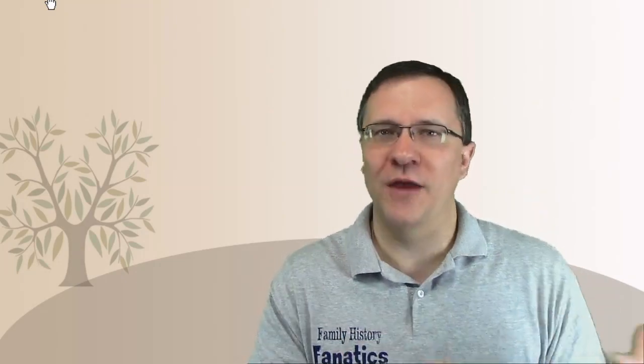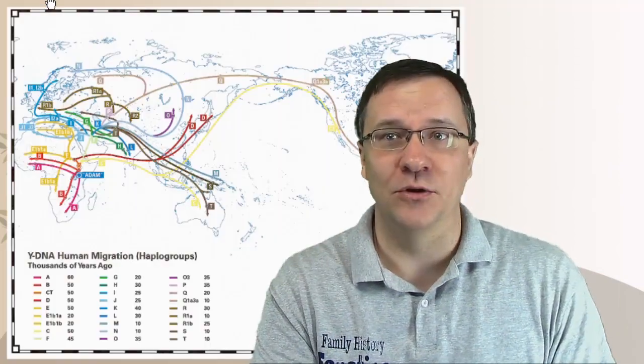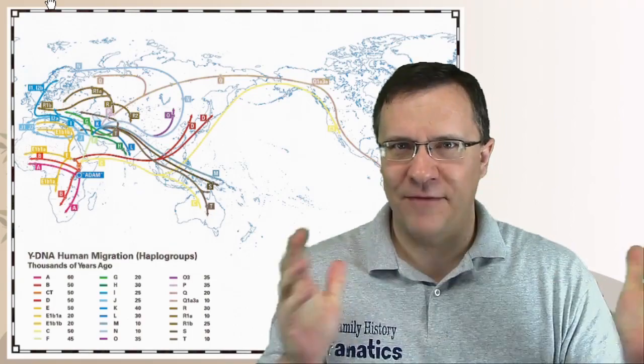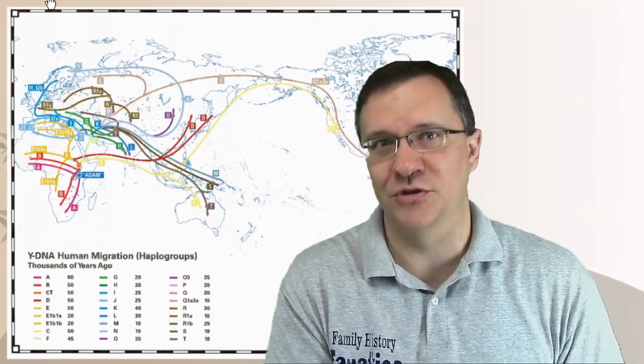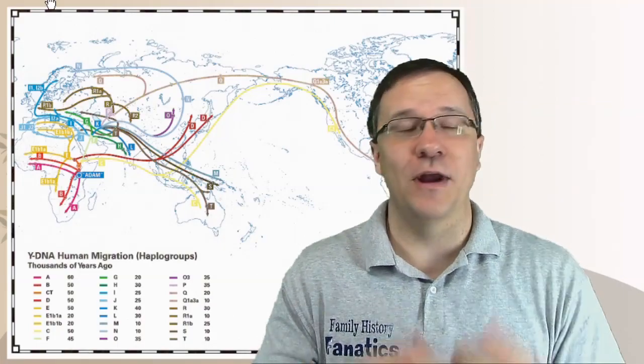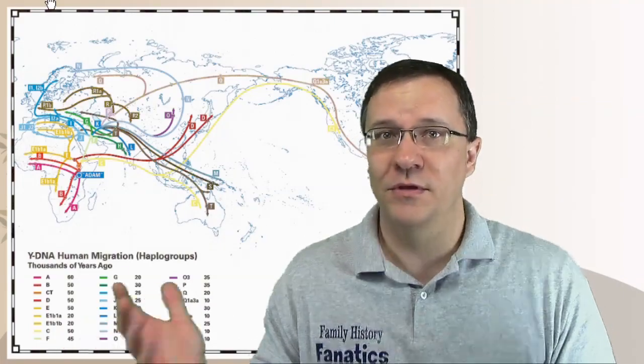Your paternal haplogroup is a representation of your father's father's father's father. It is the mutations that have happened on your Y chromosome as it's been passed down through the generations. As we map back haplogroups, we come back to a single haplogroup, a single individual, and this person lived in Africa some 70,000 years ago. That is where all of the Y-DNA for everyone on the earth came from.